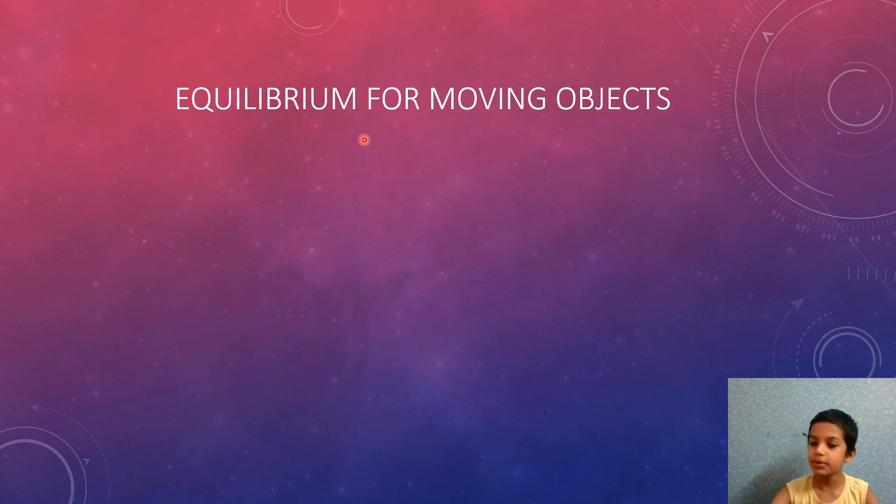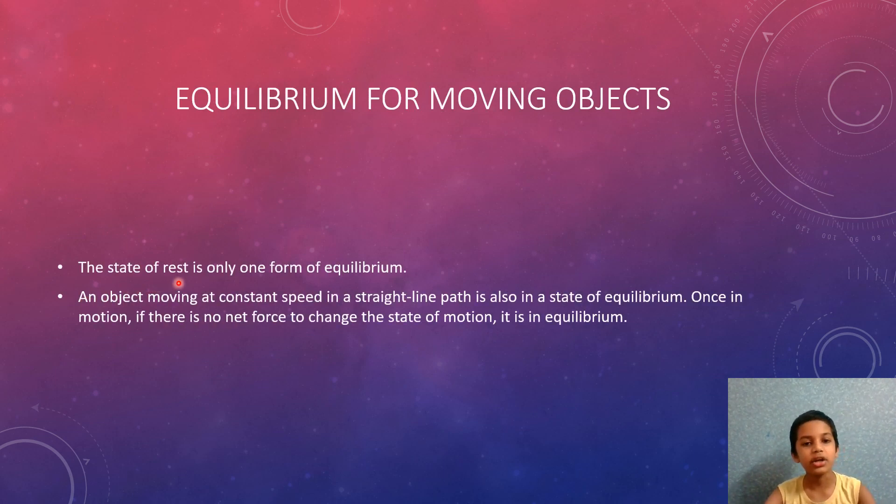Equilibrium for moving objects: The state of rest is only one form of equilibrium. An object moving at constant speed in a straight line is also in a state of equilibrium. Once in motion, if there is no net force to change the motion, it is in equilibrium.